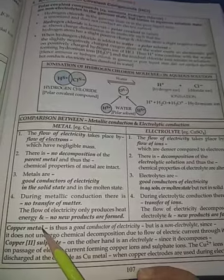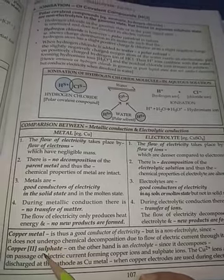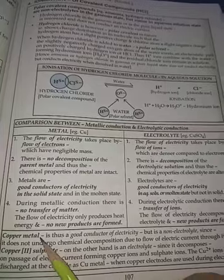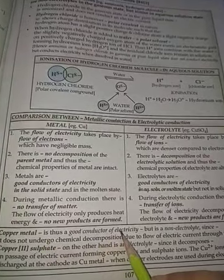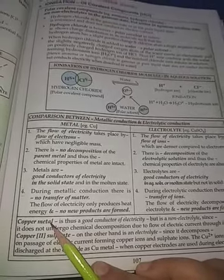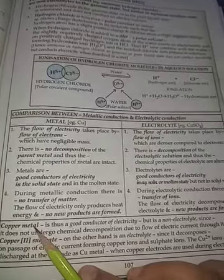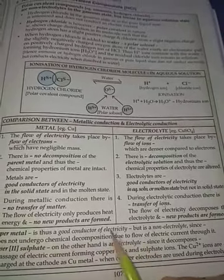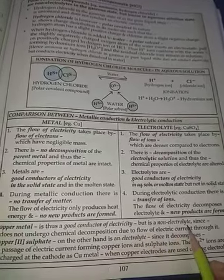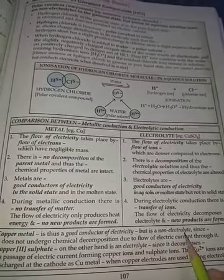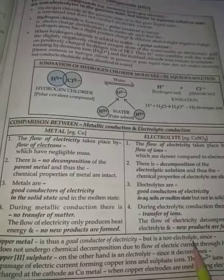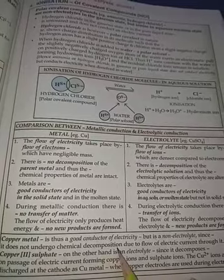Here is a comparison between copper metal and copper sulfate solution. Copper metal is a good conductor of electricity — all household wiring is made of copper, insulated with PVC. However, copper is a non-electrolyte; it does not dissociate into ions and does not undergo any chemical decomposition.